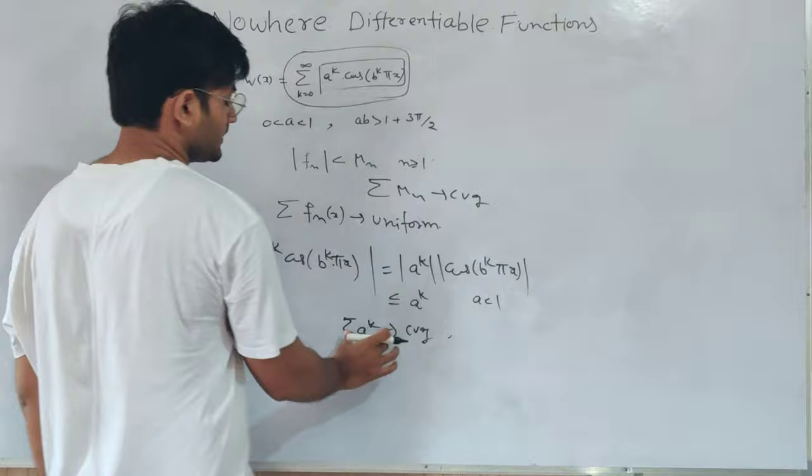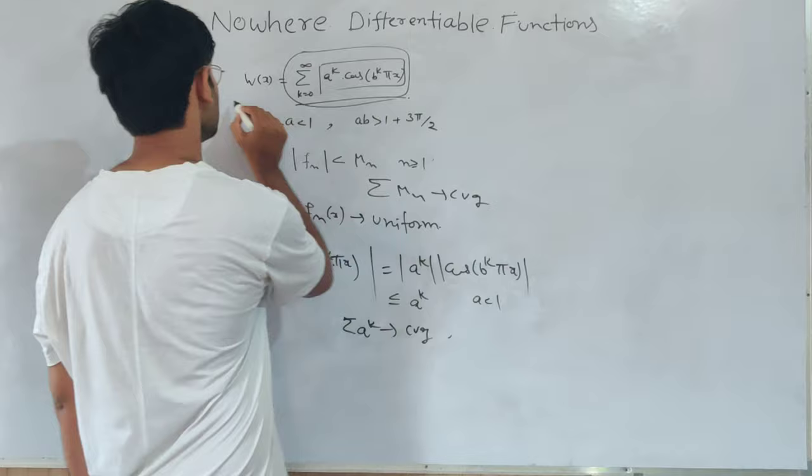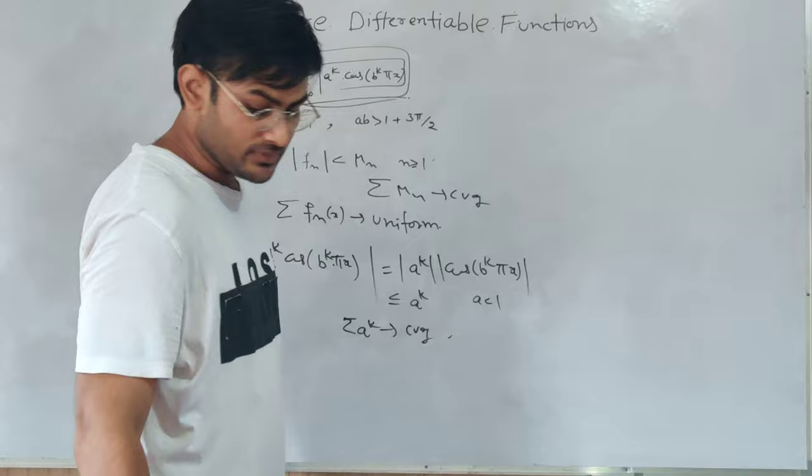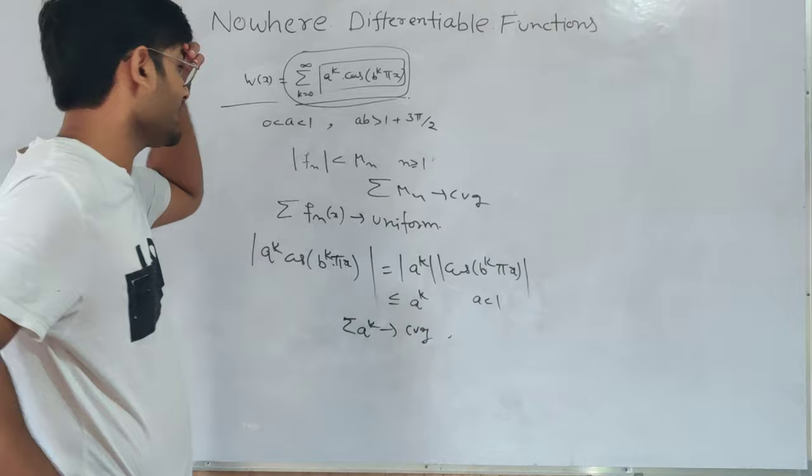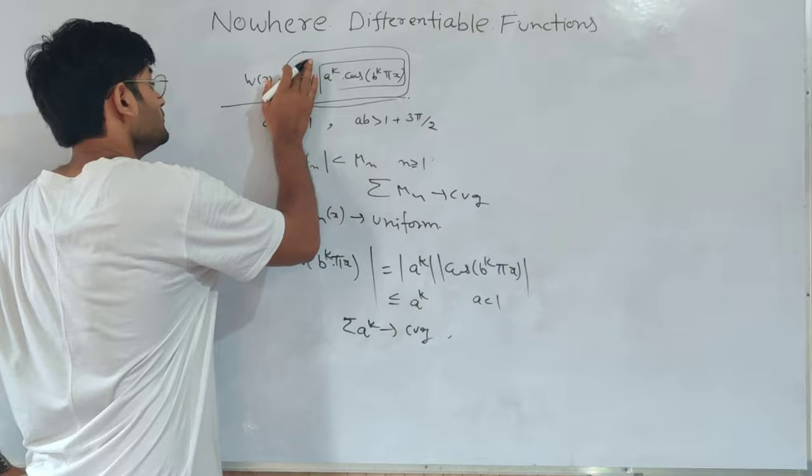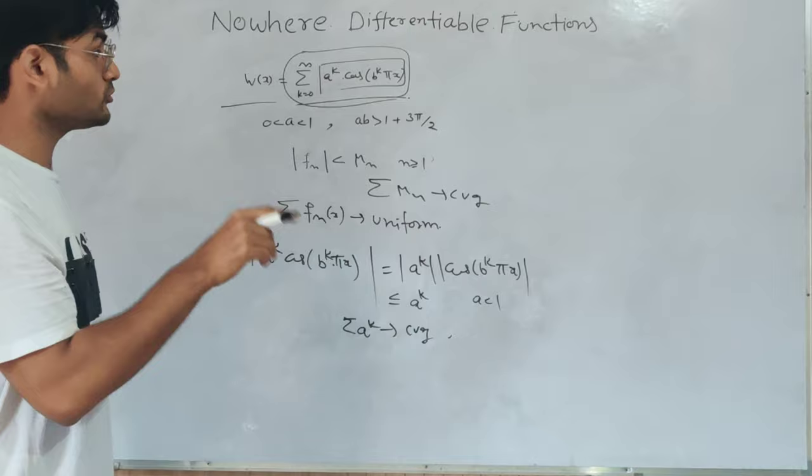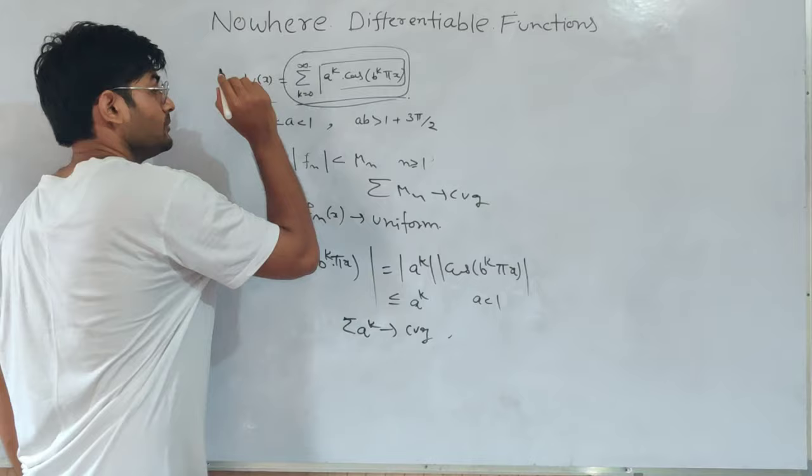And by M-test, we say that if M_n converges, then f_n, which is the series of functions, will be uniformly convergent. So the Weierstrass function will be uniformly convergent. Now we need to be careful here.